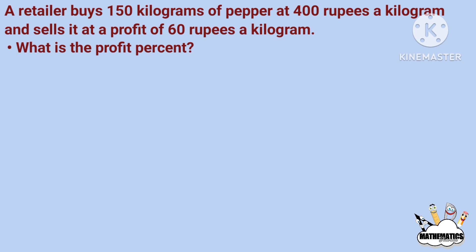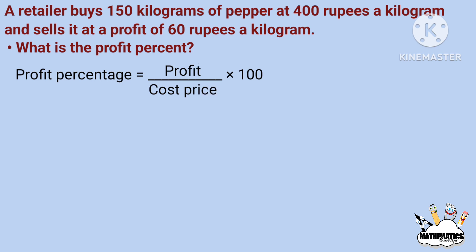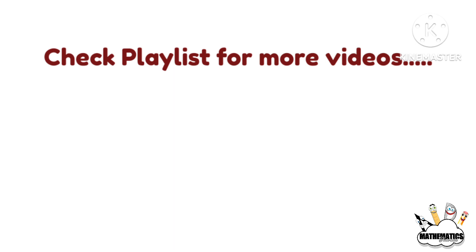Profit percentage equals profit by cost price into 100. Profit is Rs.9,000 and cost price is Rs.60,000. So this becomes 9,000 by 60,000 into 100, which gives 15%. The profit percentage is 15%.